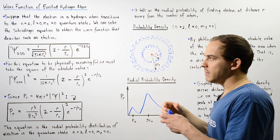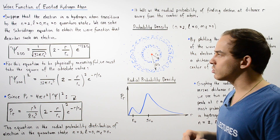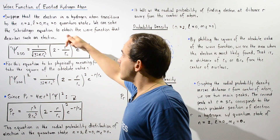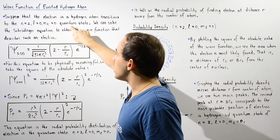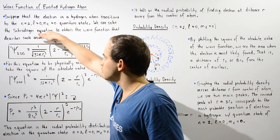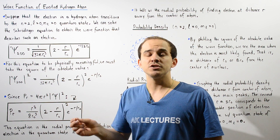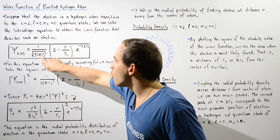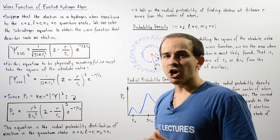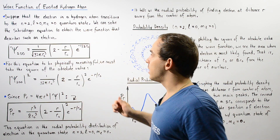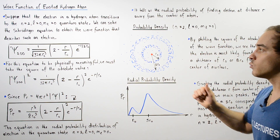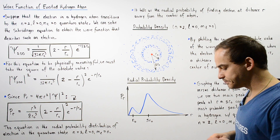Instead of focusing on the mathematical details, we're going to focus on the meaning behind this equation. The wave function for the quantum state n equals 2, l equals 0, and ml equals 0 is equal to 1 divided by the square root of 32 multiplied by pi multiplied by the Bohr radius cubed r0, multiplied by 2 minus r divided by r0, and that is multiplied by e to the power of negative r divided by 2r0, where r0 is the Bohr radius.